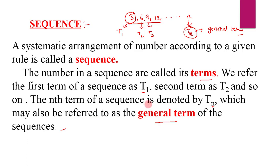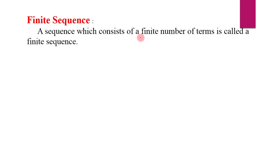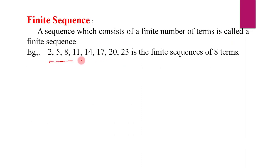Now let us see the types of sequences based on terms. The first type is a finite sequence. If a sequence consists of a finite number of terms in it, then that sequence is called a finite sequence. For example, a sequence with only 8 terms — since we are able to count how many terms there are, it is called a finite sequence.